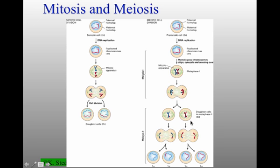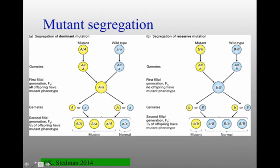Instead of maternal and paternal chromatids separating first, crossing over takes place — these chromatids and sister chromatids line up with each other. The mechanism of crossing over is extremely similar to homologous recombination discussed in the last lecture. After this homologous recombination, pieces of genomes get exchanged, and then the paternal and maternal chromatids separate, giving you haploid cells at the end. These would be your sex cells — sperm and egg in mammalian cells — each with a single copy of the genome.